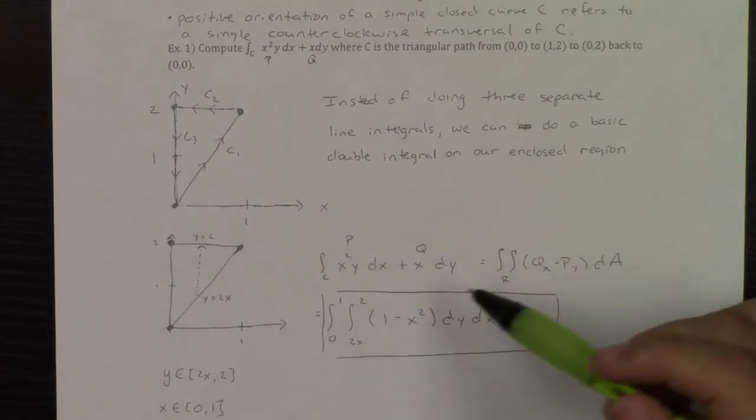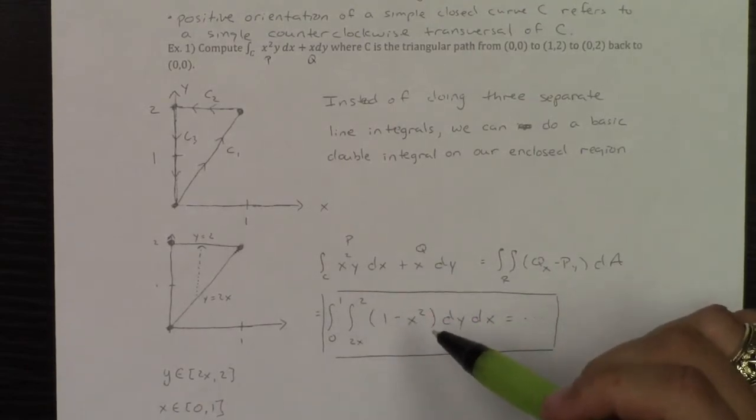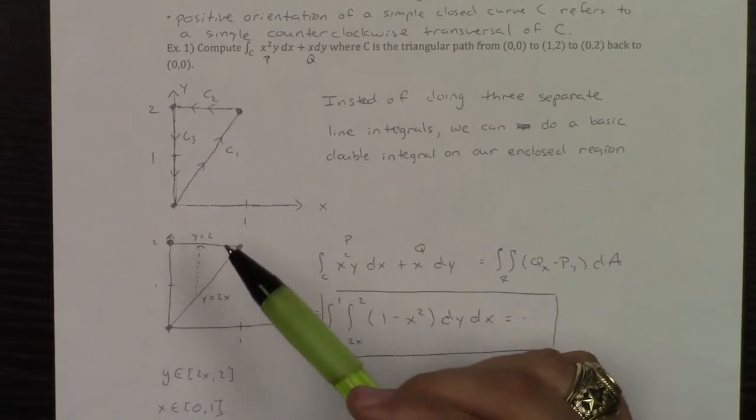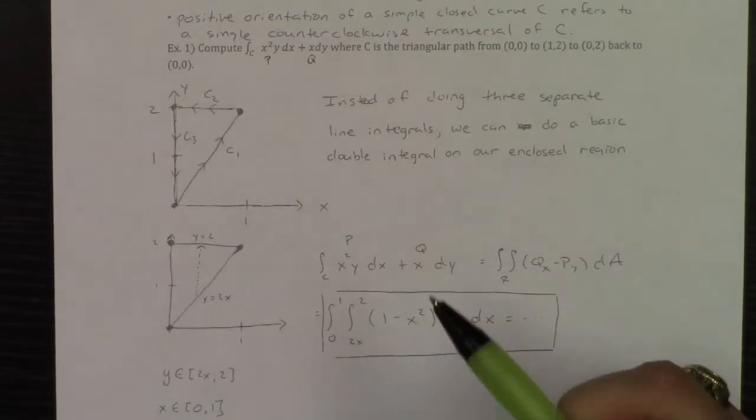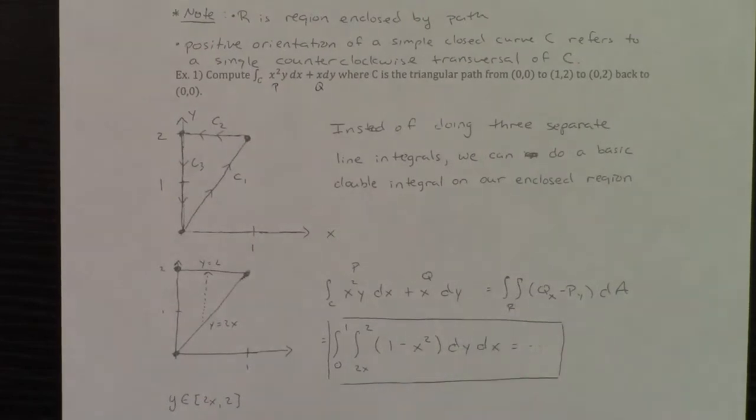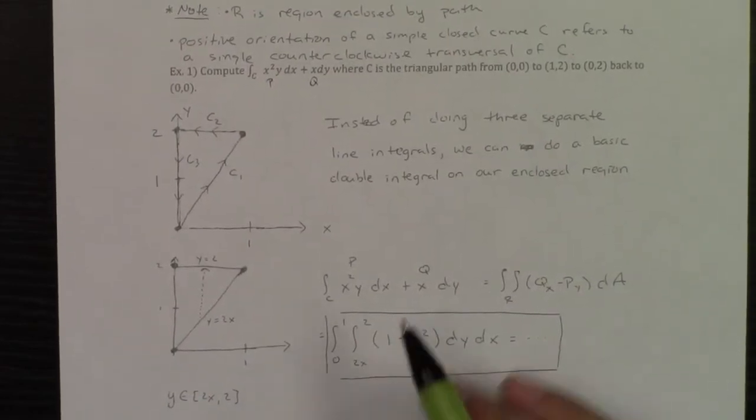qx is 1, py is negative x squared, and this is just a simple basic double integral. Can't get much simpler than this. And so that's it. That's Green's theorem. That's the whole crux of it.